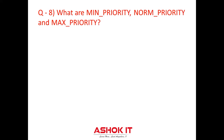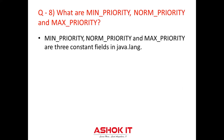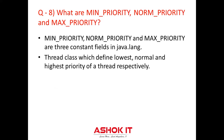Question eight: What are MIN_PRIORITY, NORM_PRIORITY, and MAX_PRIORITY? These are constant fields defined in the java.lang.Thread class which define the lowest, normal, and highest priority for a thread respectively. MIN_PRIORITY defines the lowest priority a thread can have and its value is 1. NORM_PRIORITY defines the normal priority a thread can have and its value is 5. MAX_PRIORITY defines the highest priority a thread can have and its value is 10.